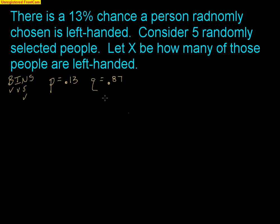Now they want us to create a probability model where capital X is how many of those people are left-handed. I'm going to think about my options: I could have 0 people that are left-handed, 1, 2, 3, 4, or all 5 people could be left-handed.